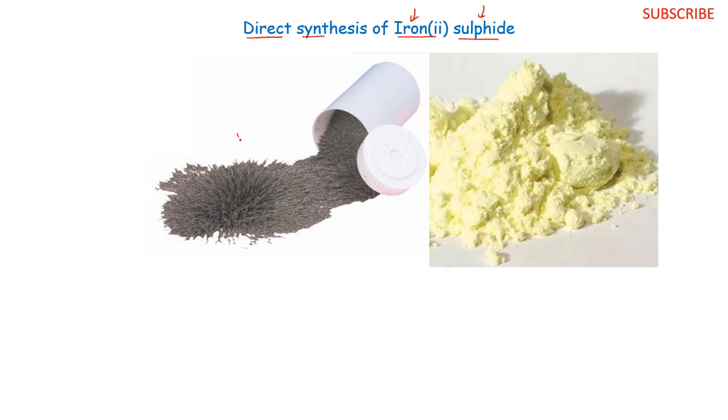So here we have our iron filings. If you have ever played with a magnet, either in class or outside class, you might have come across iron in this form, basically scraps of iron particles. So we have iron filings and it's basically gray in color. And then we have our powder sulfur, sulfur in powder form, basically yellow in color.